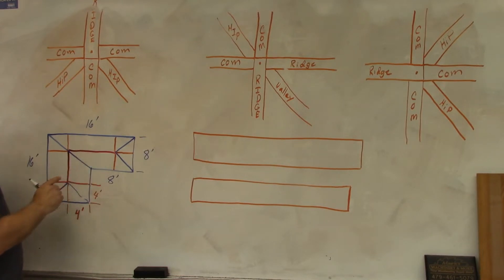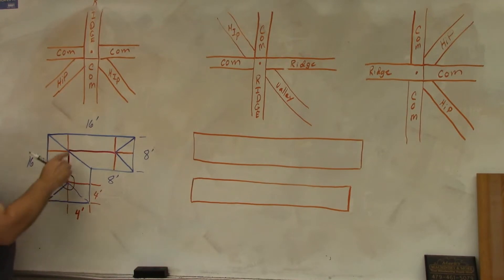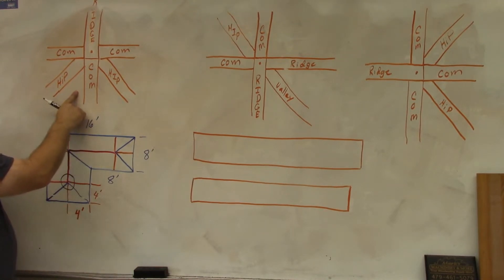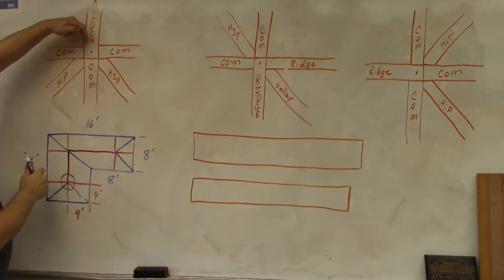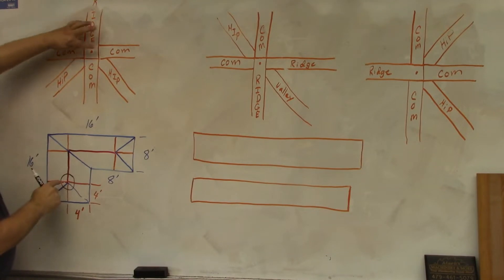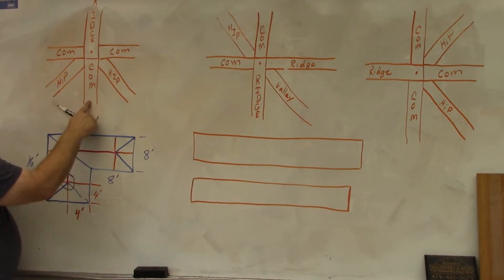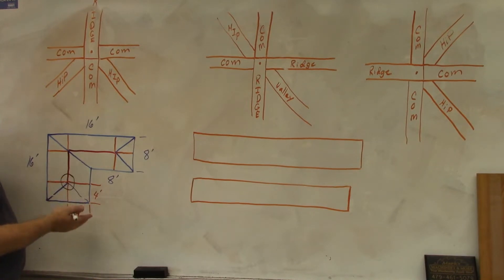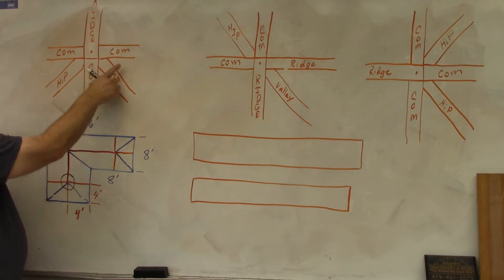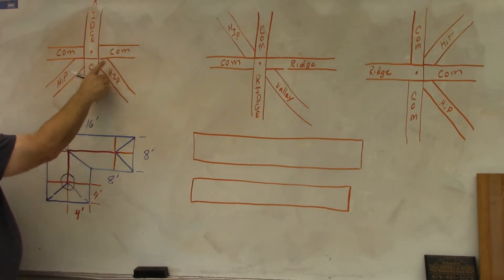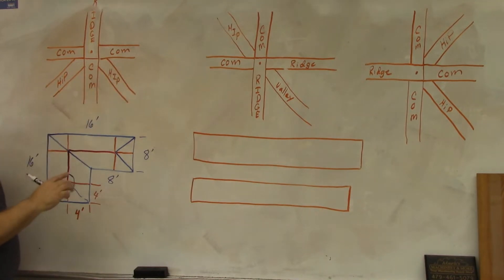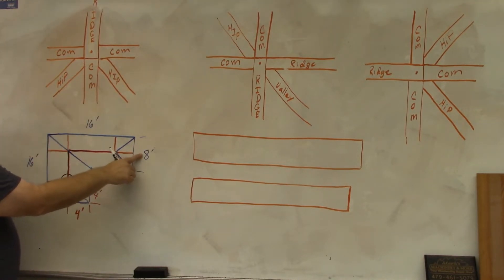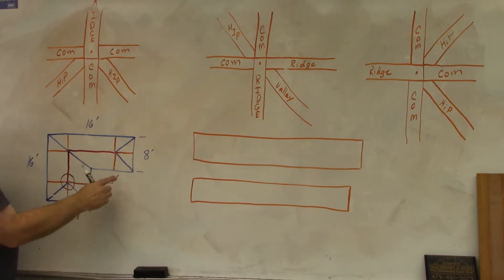We've got to figure out what the length of the ridge boards are. Looking at this corner first — I drew a larger diagram of this corner. You have your ridge coming in from here, then your commons, your hips, and your common coming off the end. This is the optimal way of doing it and it works if you have an even number across here. If it's an odd number, the common rafters will be offset. This is for even numbered width or span of your rafters.